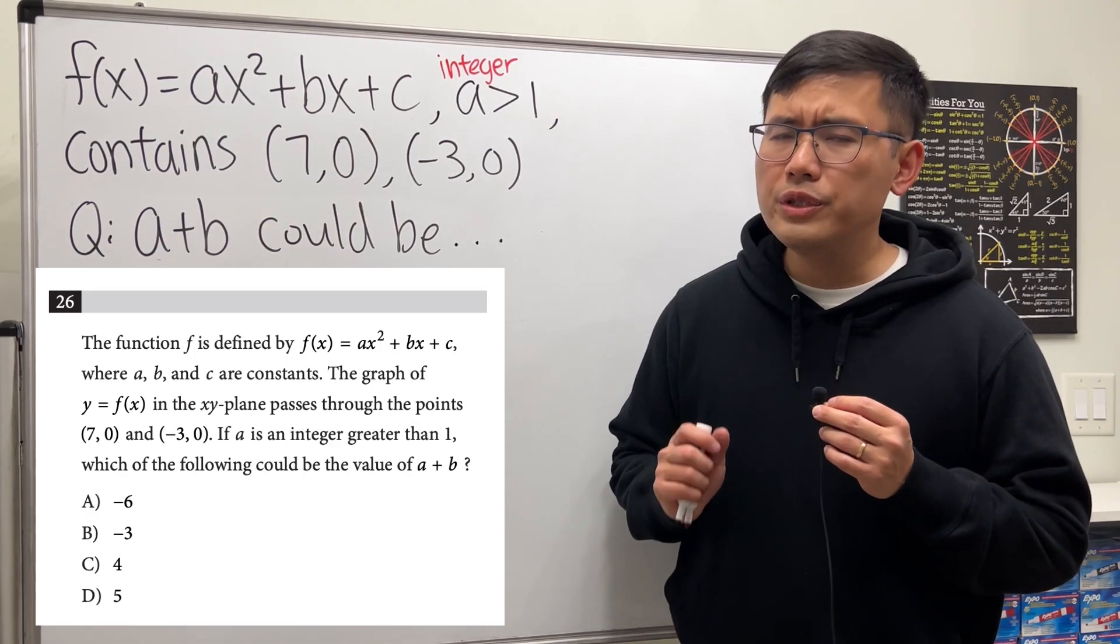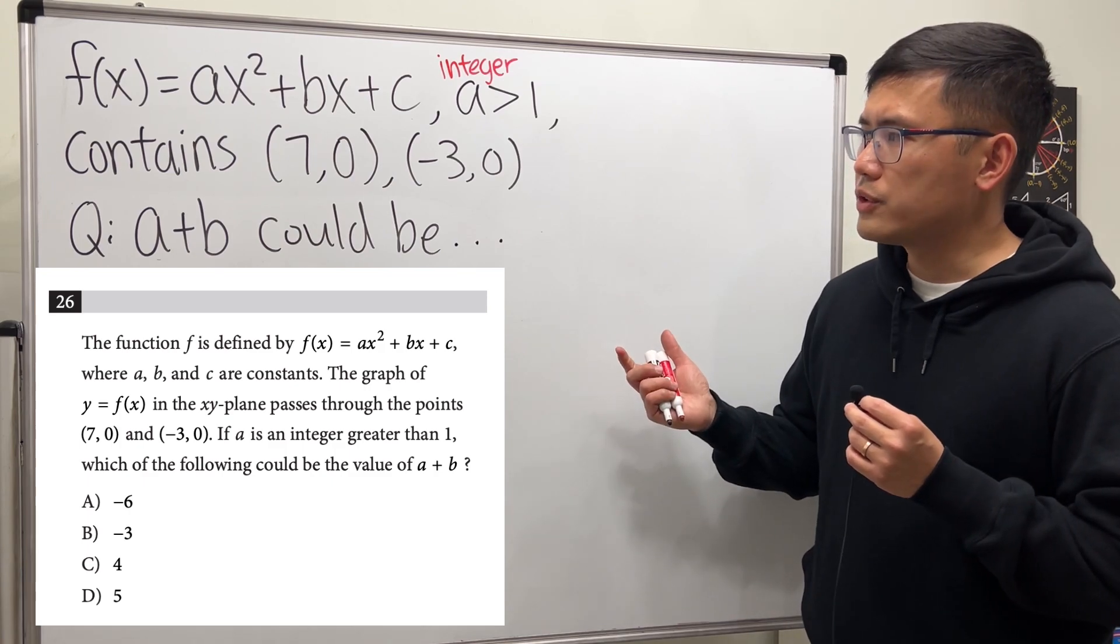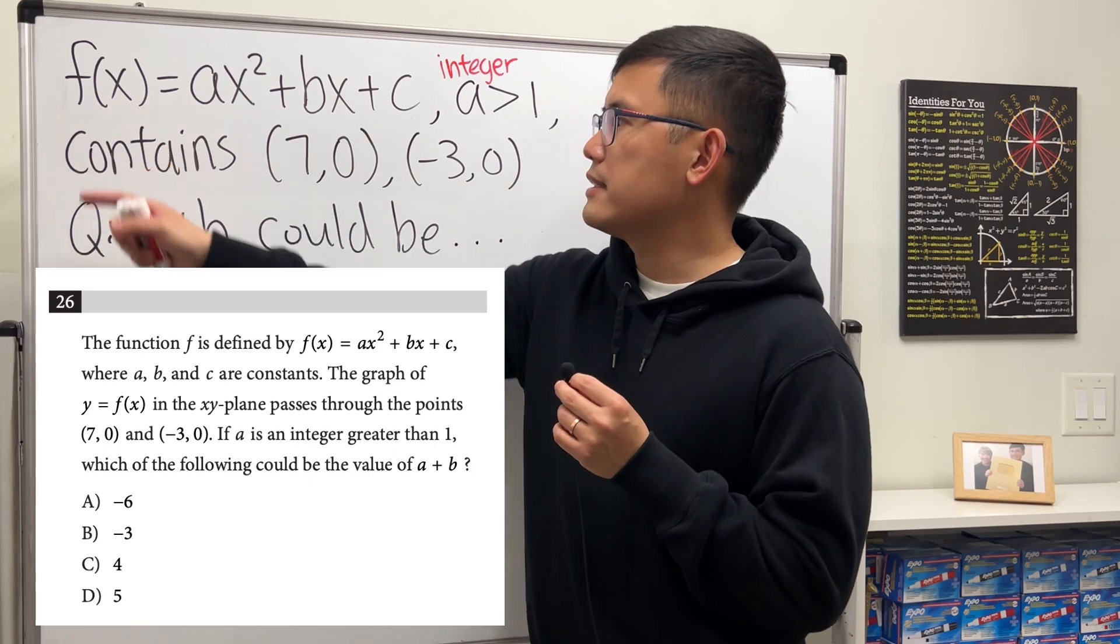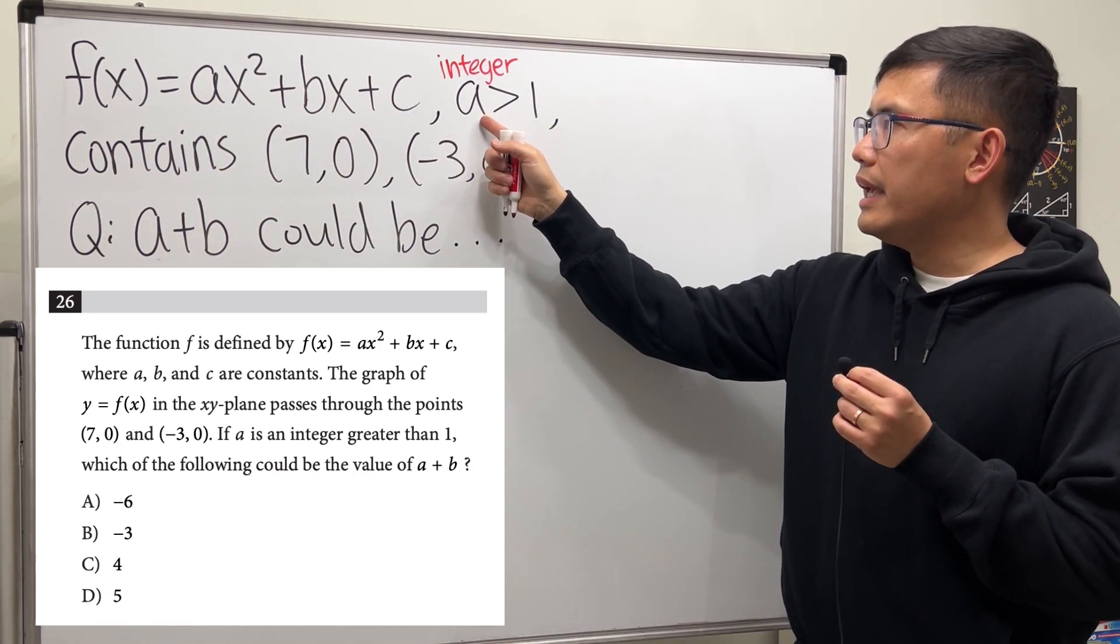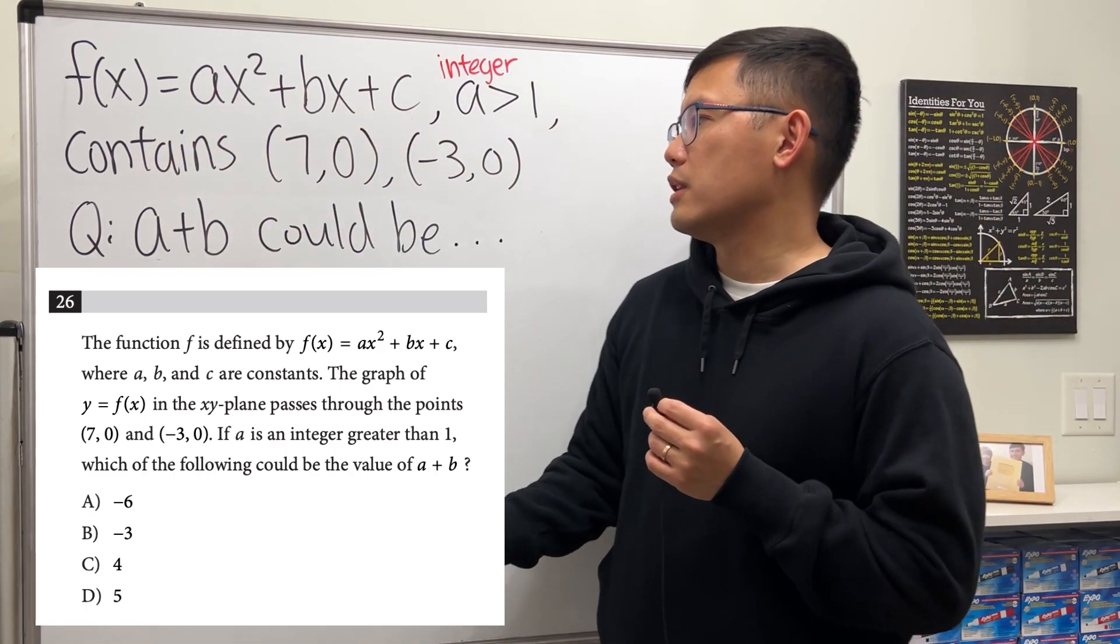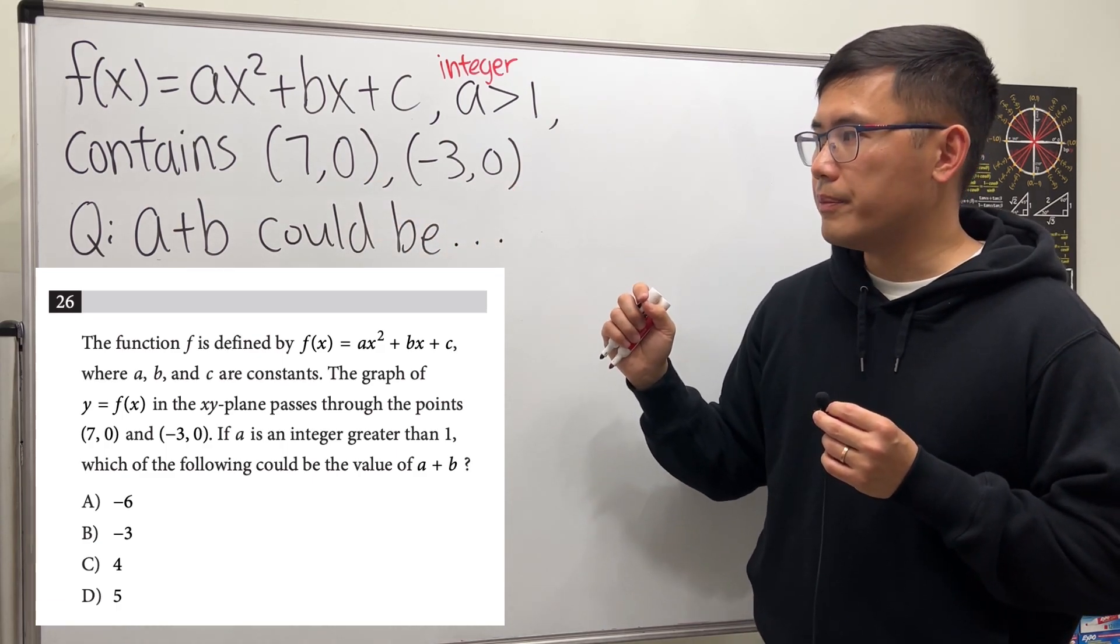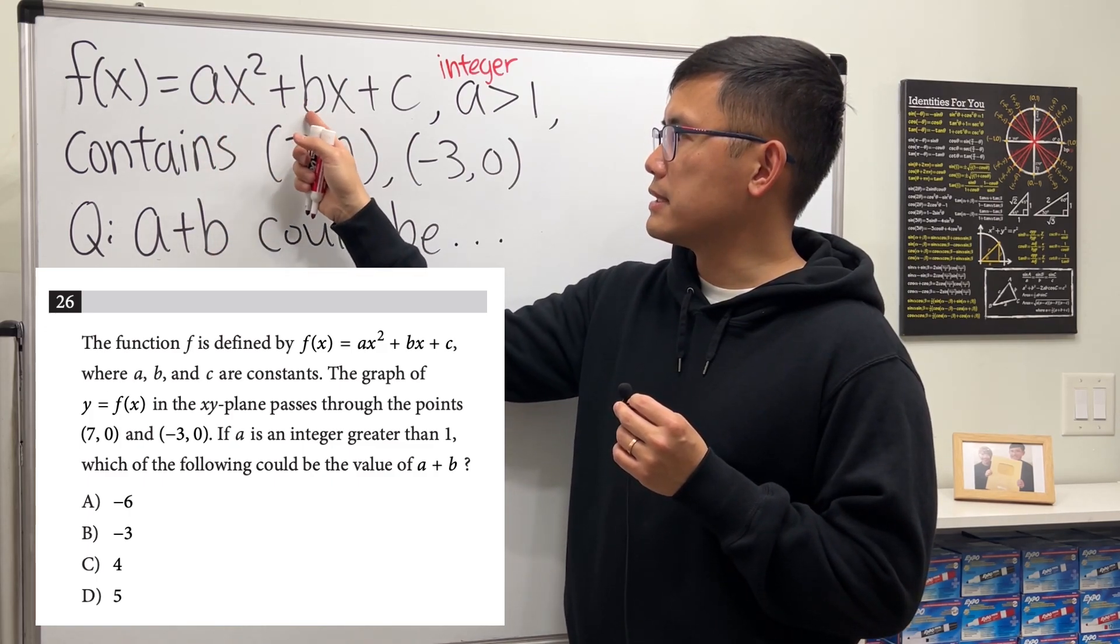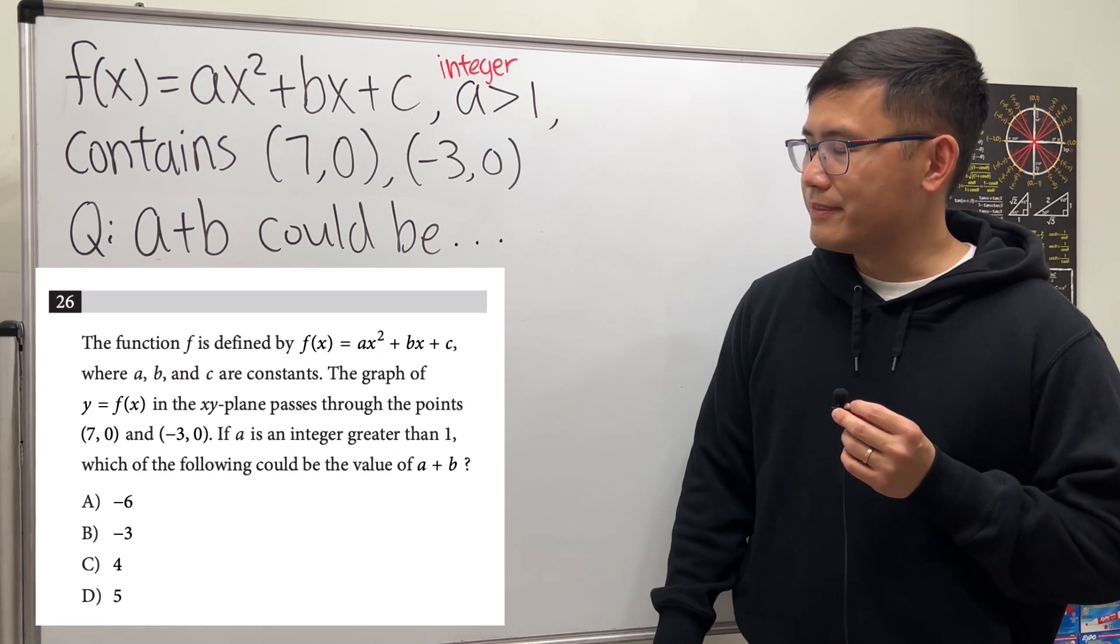Today I want to share a pretty tricky SAT math question with you guys. This is about a quadratic function. The question is we have f(x) which is a quadratic function in the standard form and we know a is an integer greater than one. When the graph of this function contains two points (7,0) and (-3,0), the question is asking us a+b could be which of the following value.